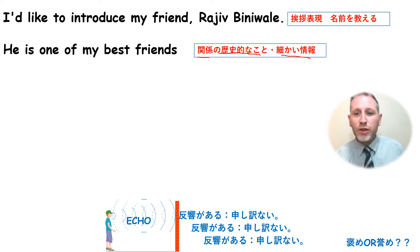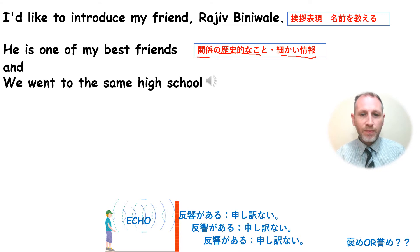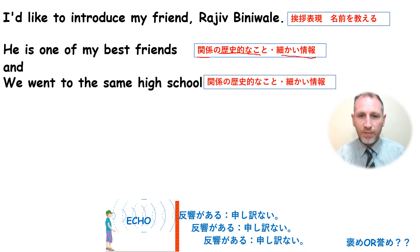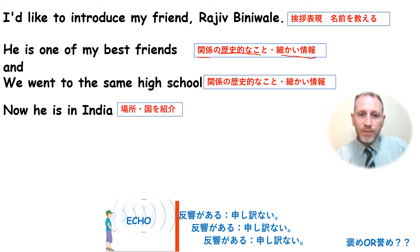This is called 'koma kai joho,' or small details. When you introduce a friend, you give small details. 'And we went to the same high school' — that's more information: how do they know each other, and from when? 'Now, he's in India.' So where is the friend living? What country? What city? You can introduce that.